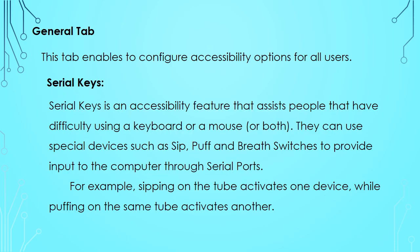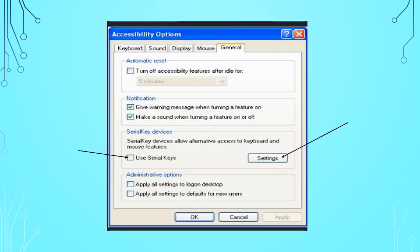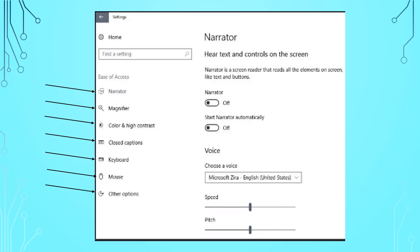The last tab is the General tab. This tab enables you to configure Accessibility Options for all users. One very important setting here is Serial Keys. Serial Keys is an accessibility feature that assists people who have difficulty using a keyboard or mouse, or both. They can use special devices such as sip, puff, and breath switches to provide input to the computer through serial ports. For example, sipping on a tube activates one device while puffing on the same tube activates another. This helps people who have multiple disabilities. From here onwards you will see the Accessibility Options of Ease of Access Center.